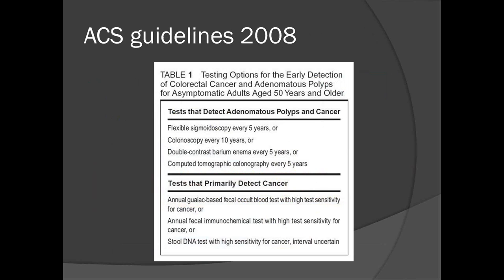Here are the American Cancer Society guidelines from 2008 — the most recent guidelines. They divide screening tests that detect adenomatous polyps, so preventing cancer as well as detecting cancer, versus those tests that primarily detect early cancers. They say if you have a choice, you should pick from the first list because it is much more effective, and CTC is on that list, done every five years for an average-risk individual.